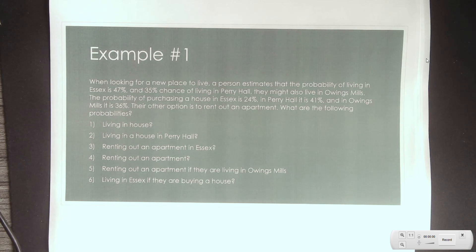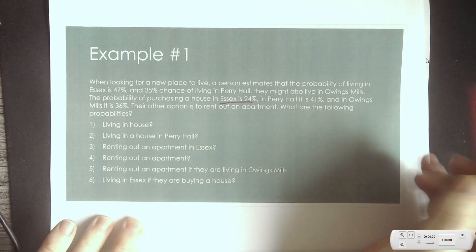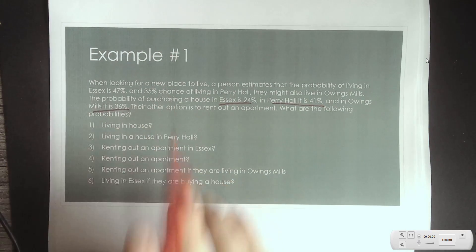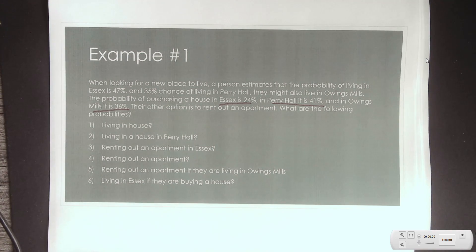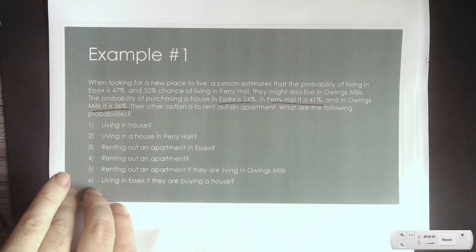First, we want to identify which variable is going to be based off the other one. In this case, it's going to be the probability of owning a house or renting an apartment, because the probability of renting changes based on whether we live in Essex at 24%, Perry Hall at 41%, or Owings Mills at 36%. So the probability of a house is dependent on where you live. We're going to build our tree diagram here.